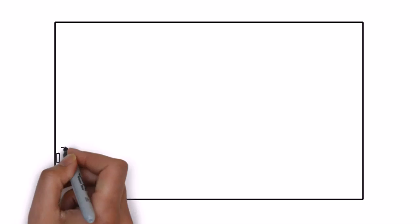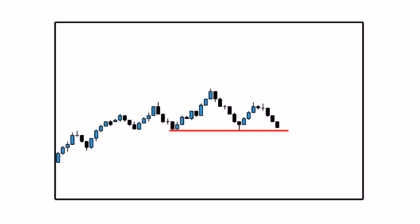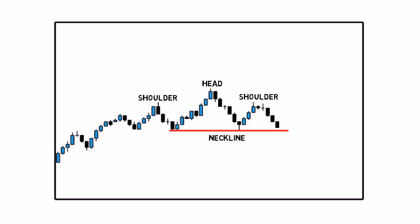The second is a horizontal neckline. This is my favorite one because, as we have said in our previous videos, diagonal support and resistance levels are very subjective, and only a horizontal neckline will appear on your chart the same as on any other trader's charts.